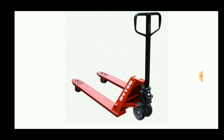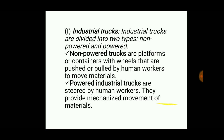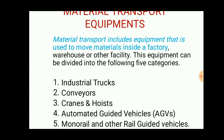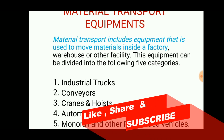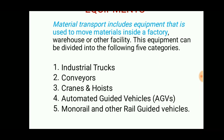Welcome to Engineering Study Materials. Today we are going to discuss material handling equipment. Material handling equipment are the tools or devices used to transport or move materials from one place to another inside an industry, warehouse, or other place. There are five general machines used to transport materials: industrial trucks, conveyors, cranes and hoists, automated guided vehicles, and monorail and other rail guided vehicles.